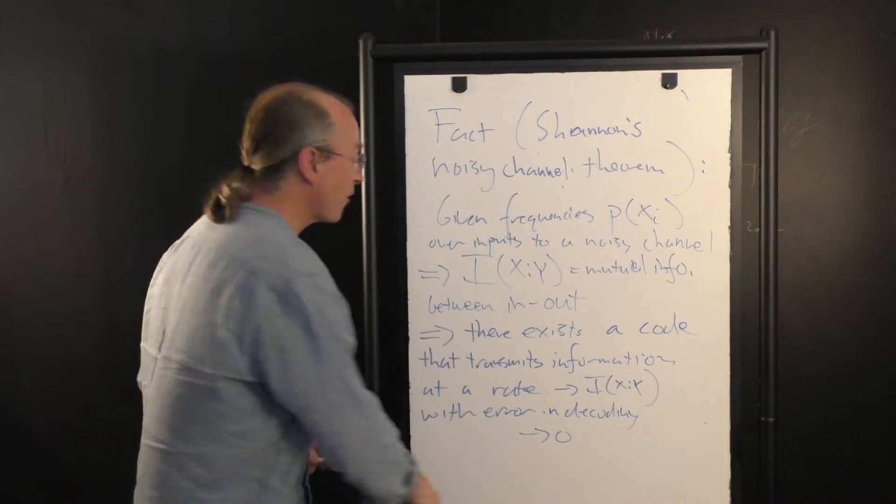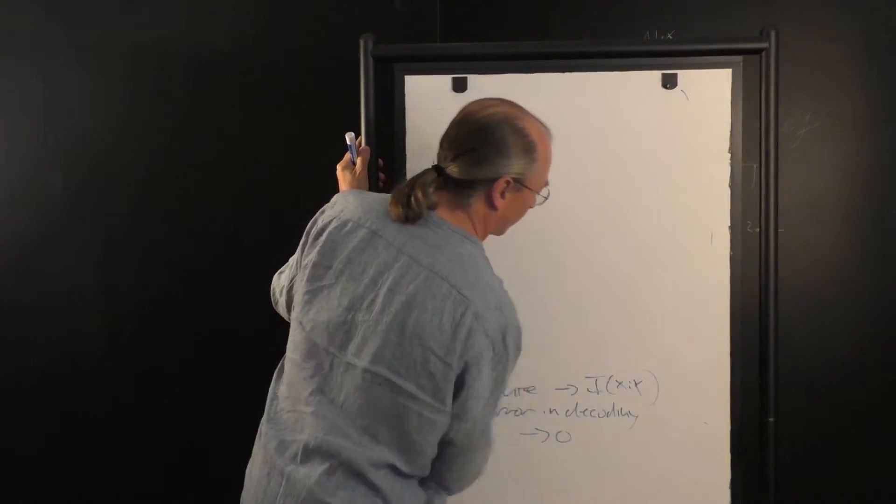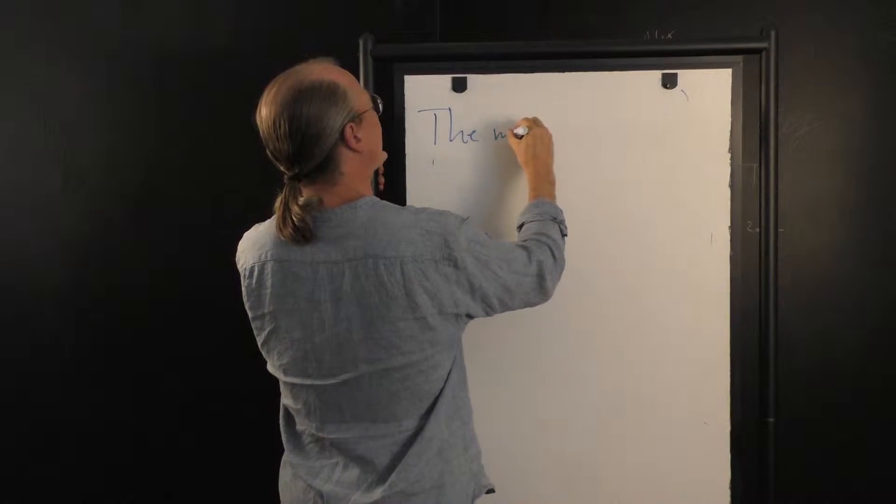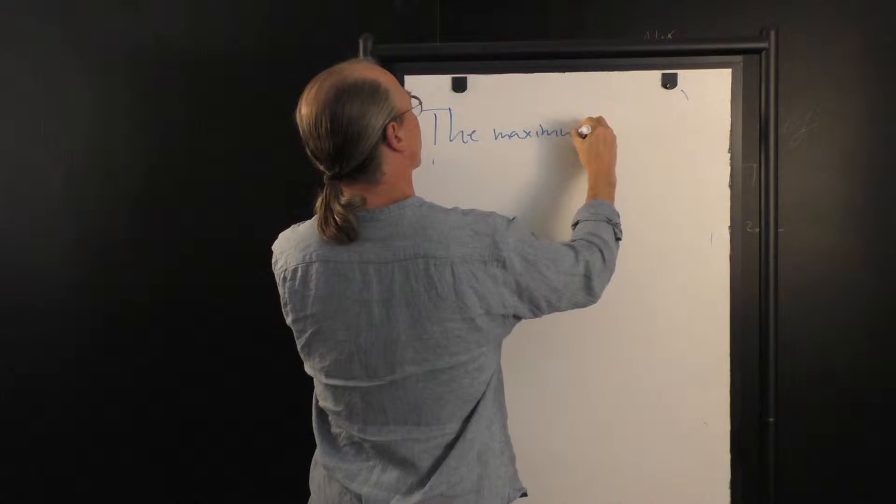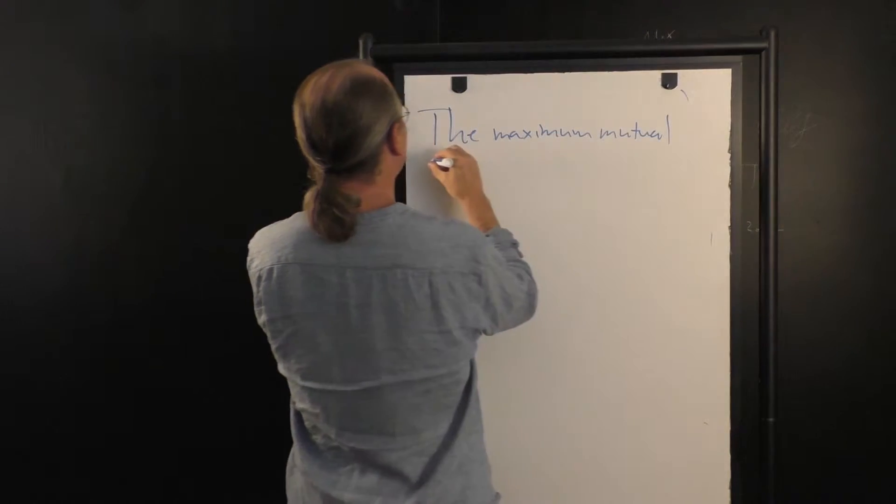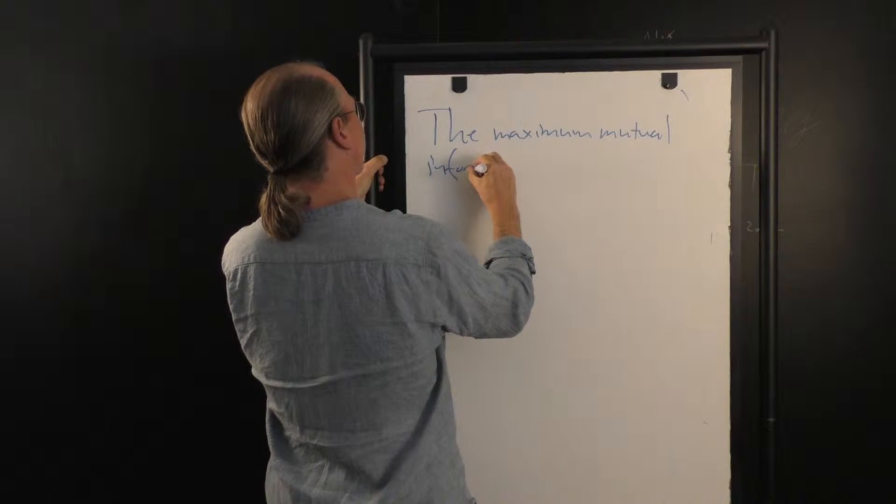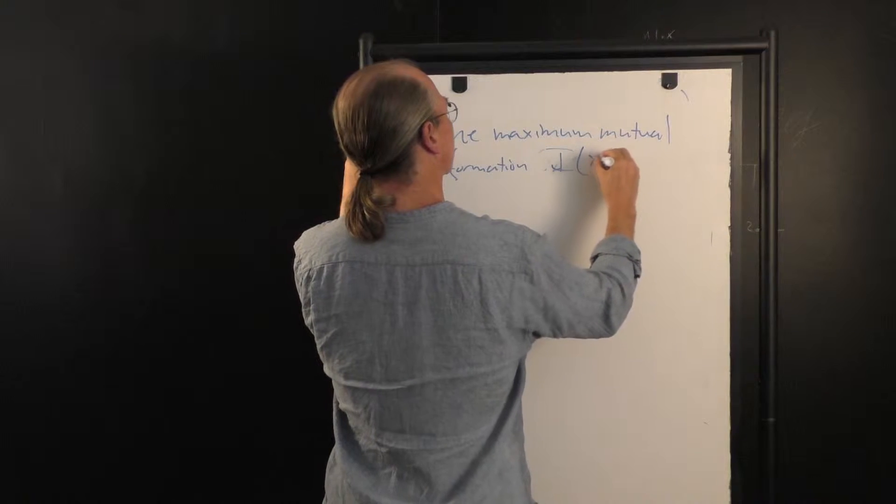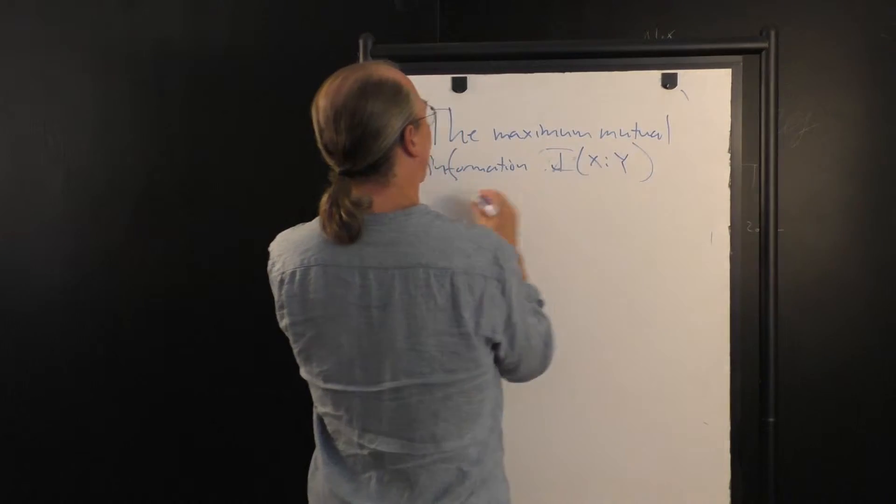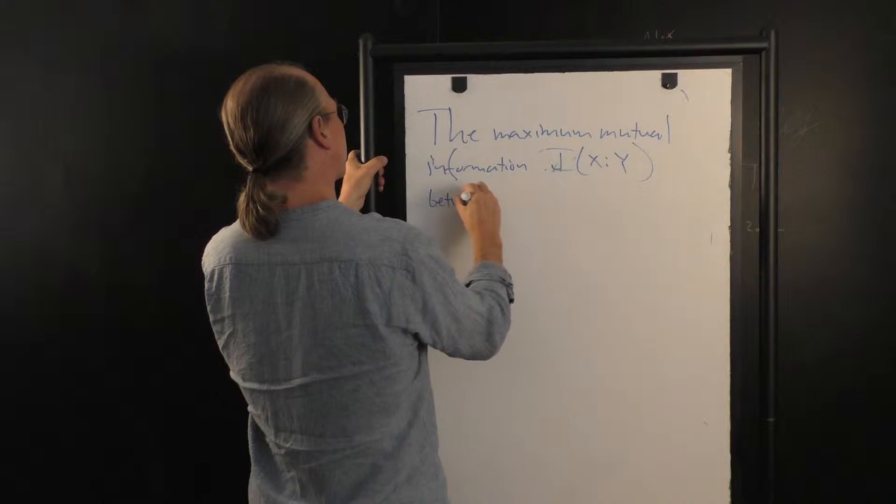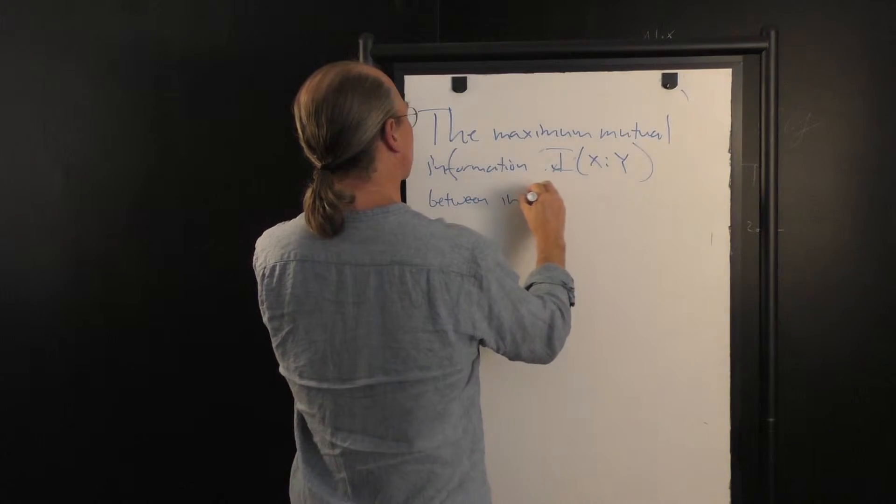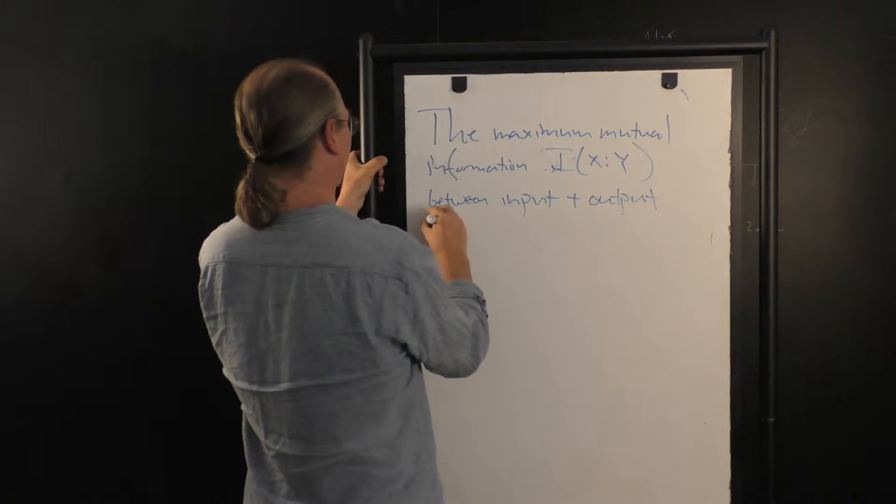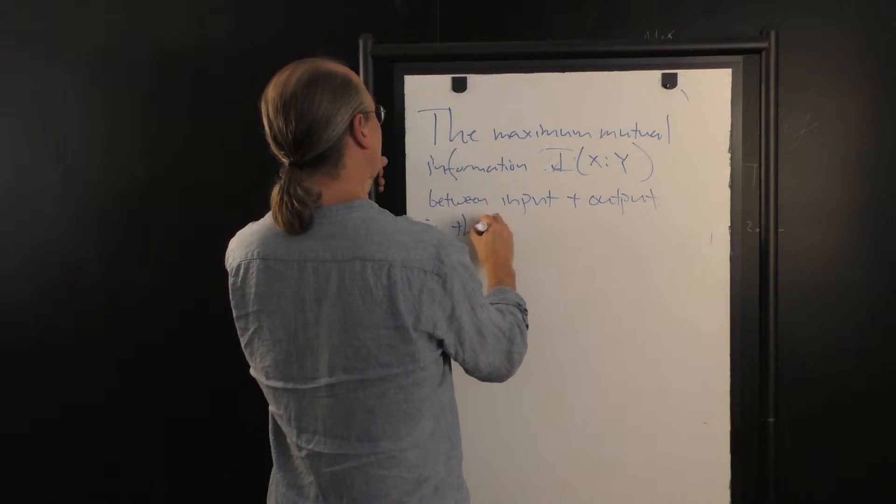In other words, the maximum mutual information, I(X:Y) between input and output is the capacity of the channel.